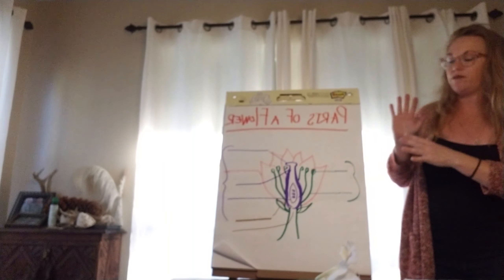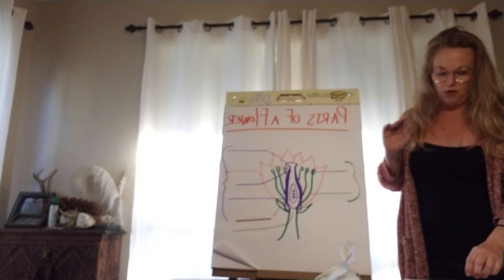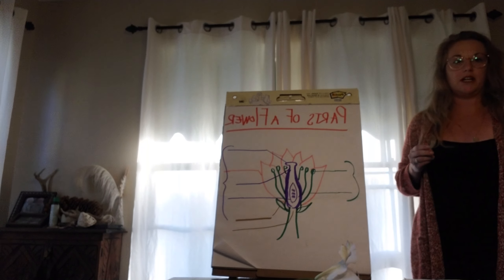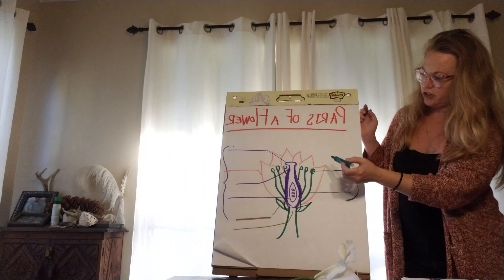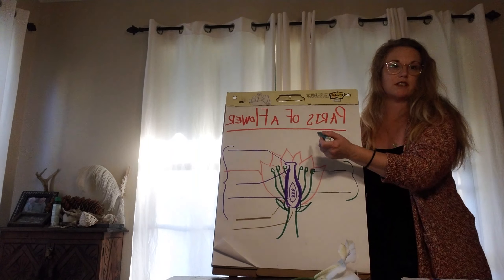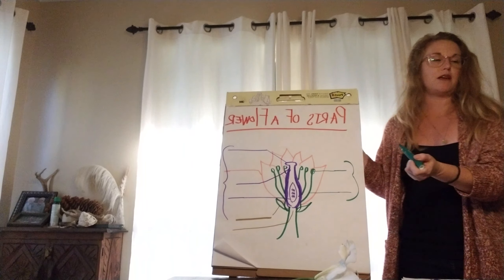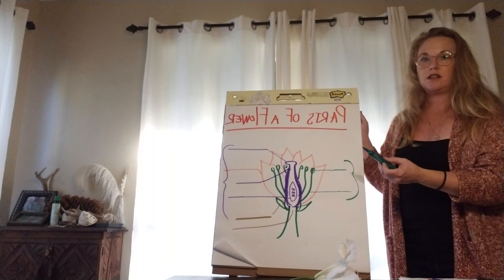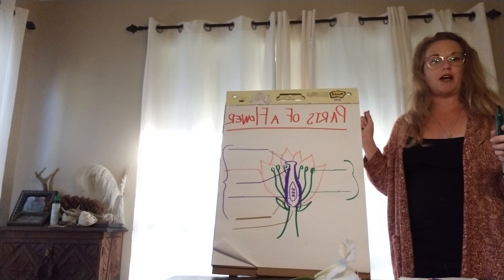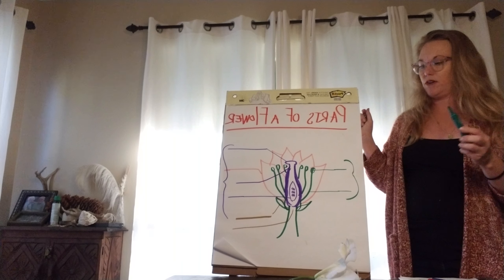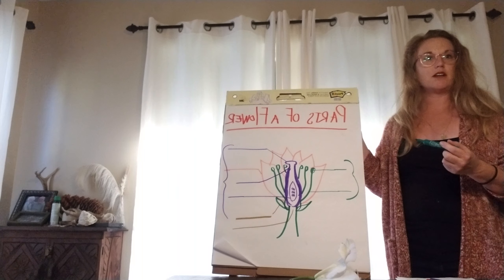Using your flower you can kind of follow along. Let's start with the green section — what are these? Does anybody know the names of these? Look at your flower, look inside your flower — can you find that part of the flower?